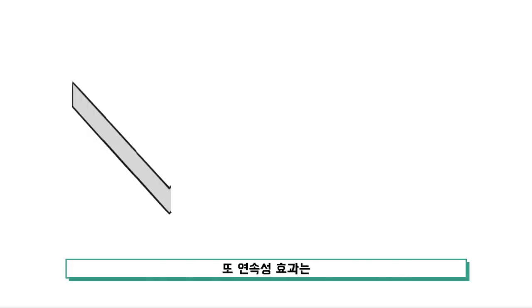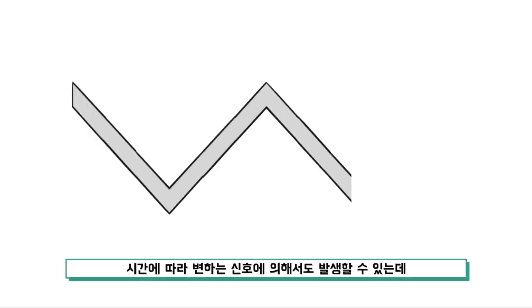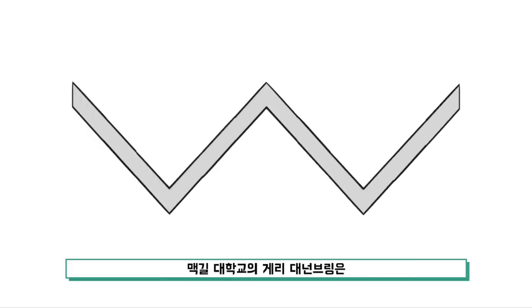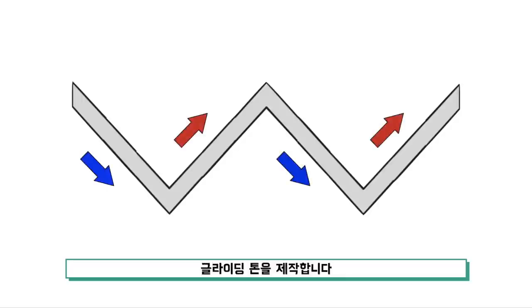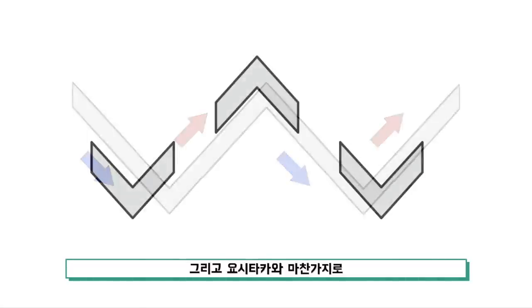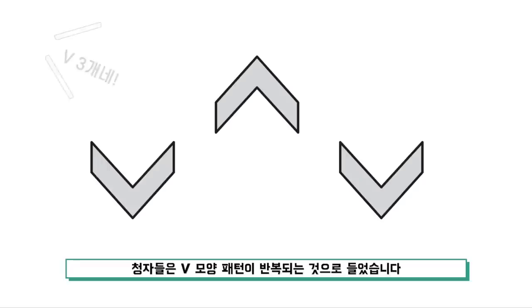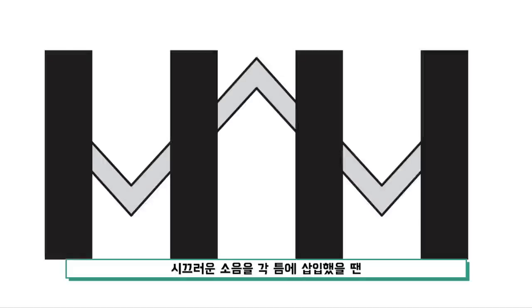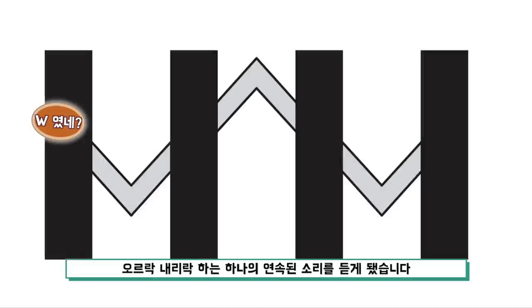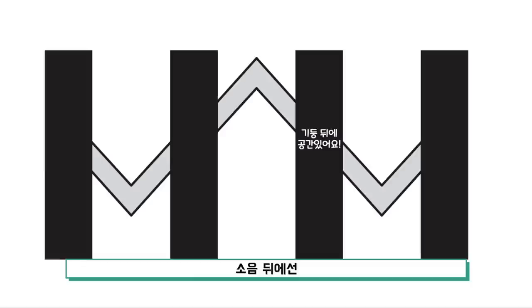또 연속성 효과는 시간에 따라 변하는 신호에 의해서도 발생할 수 있는데 맥길 대학교의 게리 대넘브링은 오르락 내리락 미끄러지는 글라이딩 톤을 제작합니다. 그리고 요시타카와 마찬가지로 그는 이 미끄러지는 소리의 중간중간을 삭제했는데요. 삭제한 공간들을 비워두었을 땐 청자들은 V모양 패턴이 반복되는 것으로 들었습니다. 하지만 시끄러운 소음을 각 틈에 삽입했을 땐 오르락 내리락하는 하나의 연속된 소리를 듣게 됐습니다. 소음 뒤에서는 아무런 소리도 흘러나오지 않았음에도 말이죠.